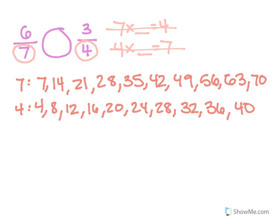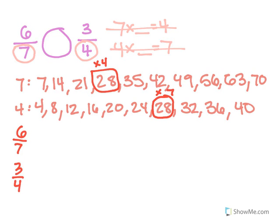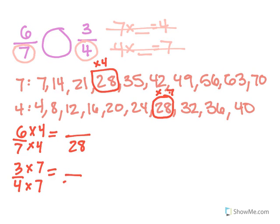So I look for the ones that are in common. I don't see 7, I don't see 14, I don't see 21 — but there is a 28. There is a 28. I have to multiply this one by 4 and this one by 7 to get there. So I'm going to take 6 sevenths and 3 fourths. I'm going to multiply 6 sevenths by 4 and 3 fourths by 7. I get my denominators the same — 7 times 4 is 28, 4 times 7 is 28. The numerators: 6 times 4 is 24, 3 times 7 is 21.